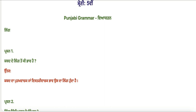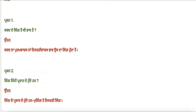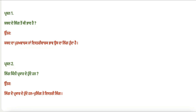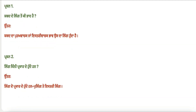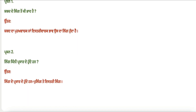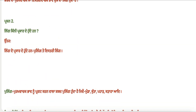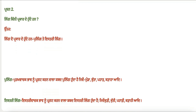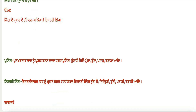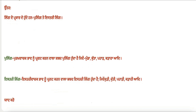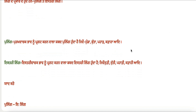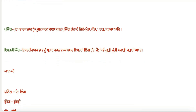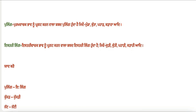First, we will study ling (grammatical gender). The first question is: what is ling? The word that expresses the gender of a noun is called ling. It indicates whether a word is masculine (pulling) or feminine (istri ling). For example: kudi (girl), kutti (female dog), pahadi, kadahi — these are istri ling words.